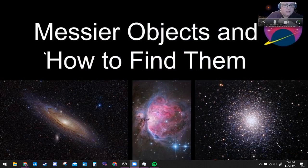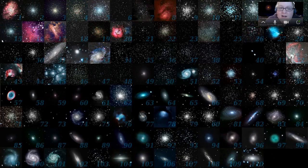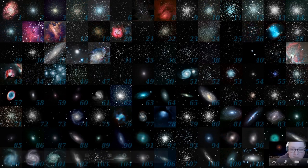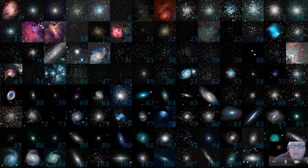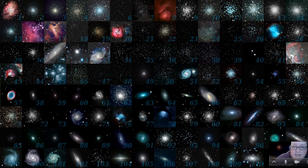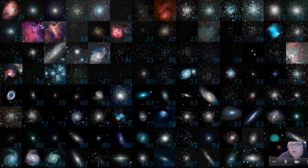Tonight's show is about things called Messier objects. There are 110 of them — a set of 110 deep space objects, meaning things outside of our solar system. They were cataloged by a man named Charles Messier, which is why it's called the Messier catalog. If you've ever heard astronomers describe an object as M and then a number — like M13, M34, M101 — that's what they're referring to. The M stands for Messier and the number is the object's position in that catalog.